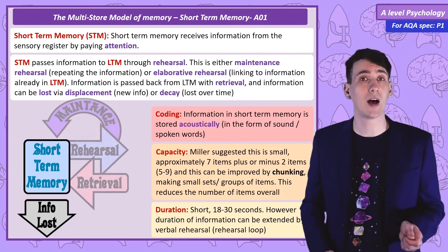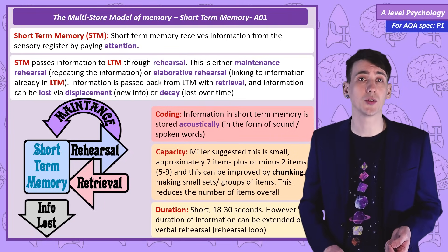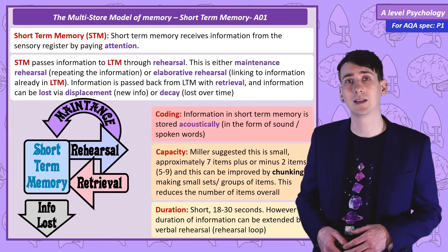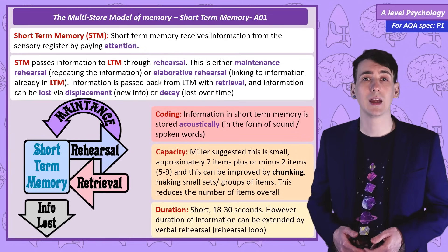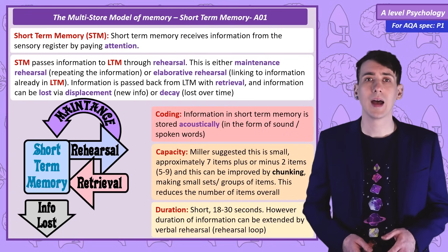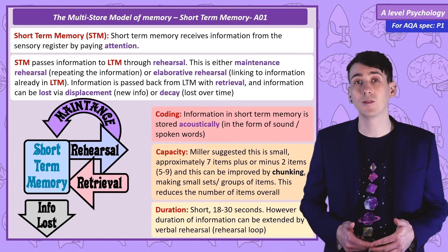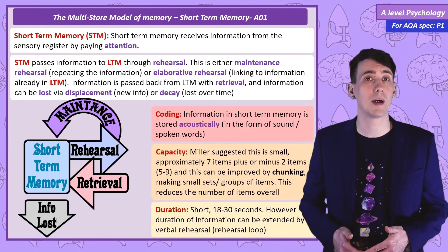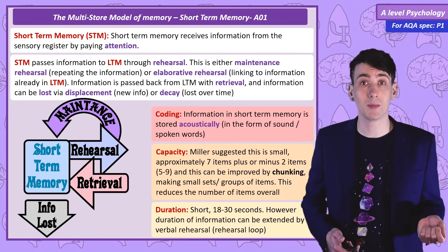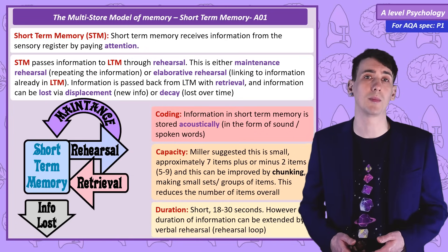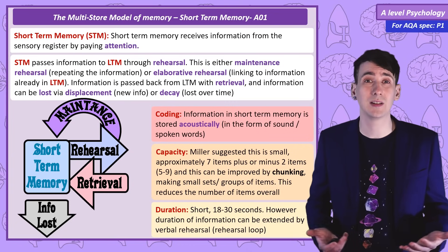Information can be passed to the final store by rehearsal. This can either be maintenance rehearsal — keeping it in short term memory by repeating it again and again in a rehearsal loop until it passes into long term memory — or elaborative rehearsal, which means linking the new information to knowledge we already have in long term memory. Information from short term memory that isn't passed to long term memory is lost, due to displacement — where new information displaces old — or decay, where unrehearsed information simply disappears over time.